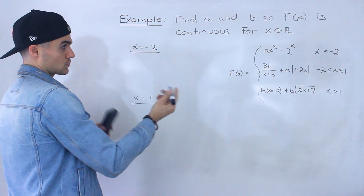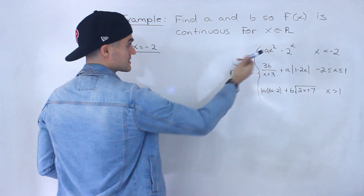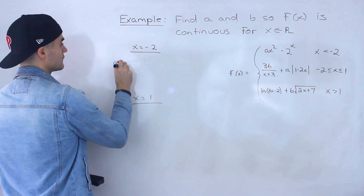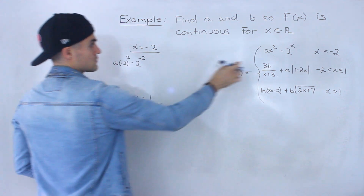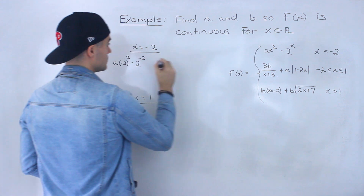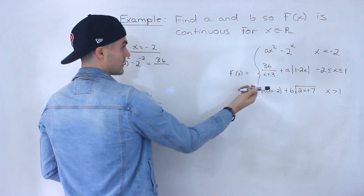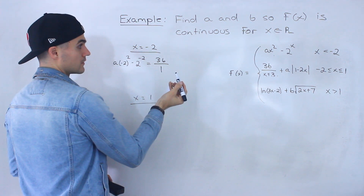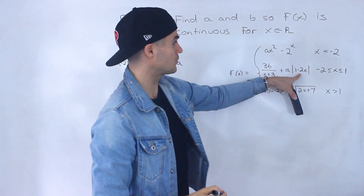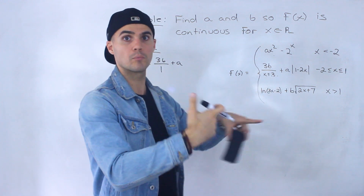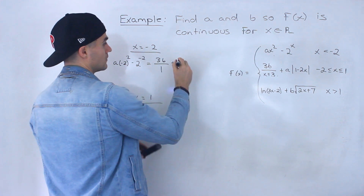To create the first equation, at the meeting point x equals negative 2, the left piece and middle piece have to be equal, so we plug in negative 2 for all x values. We get 3b over (negative 2 plus 3), which is just 1, plus a. Plugging negative 2 into the absolute value expression: 1 minus 2 times negative 2 equals 1 plus 4 equals 5, and the absolute value of 5 is 5. So the right side gives 5a.